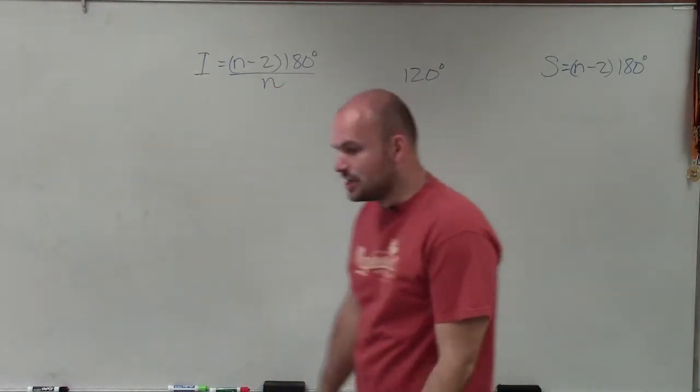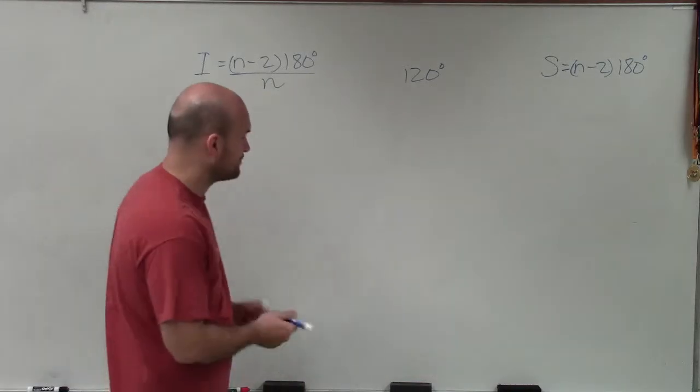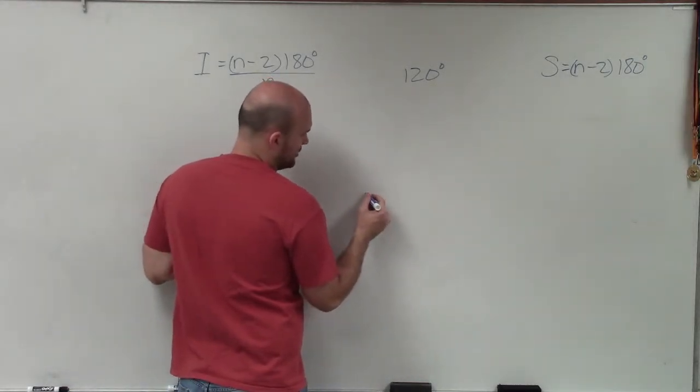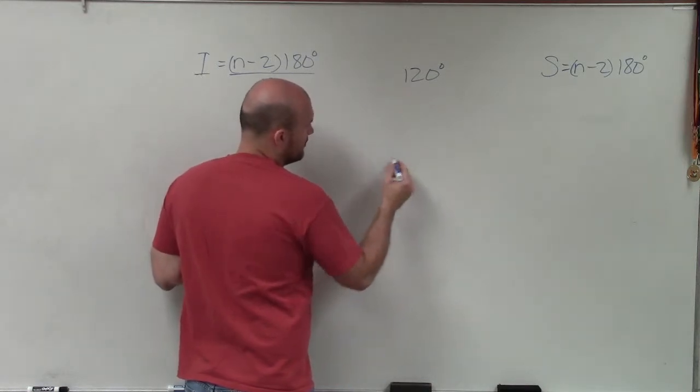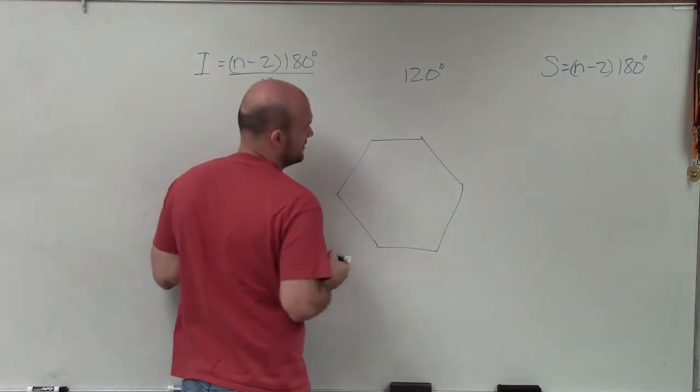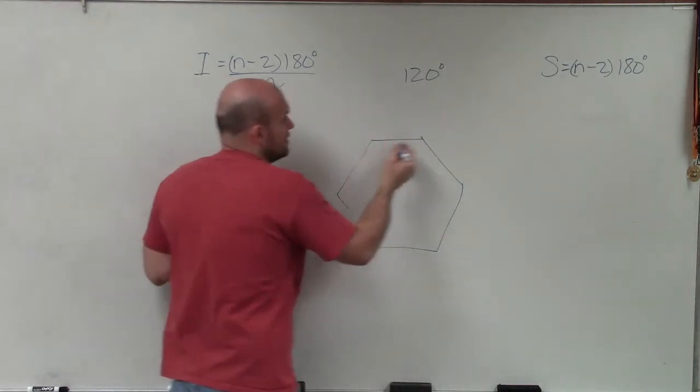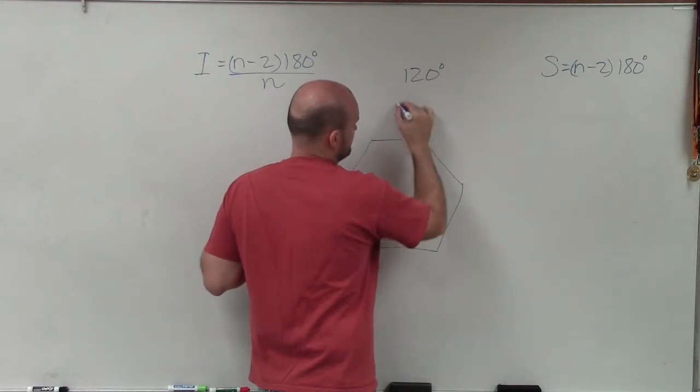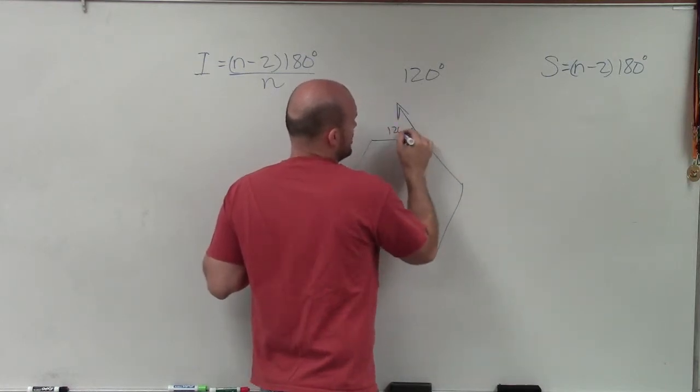So I know that the measure of the angle is 120 degrees. So if we're going to think about 120 degrees, remember exterior angles. I'll draw a hexagon here because I don't know how many sides there are. So let's pretend the number of the exterior angle for this is 120 degrees.